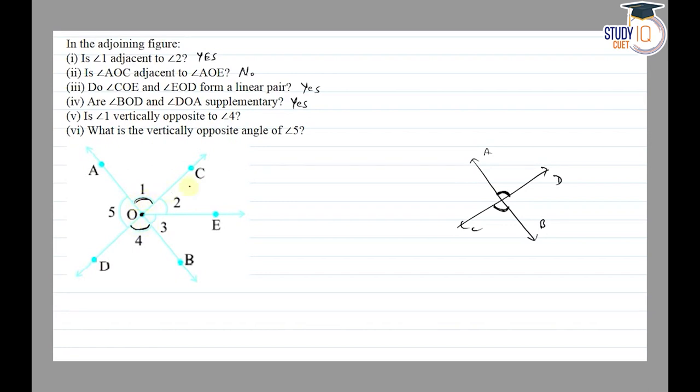So this is the vertically opposite angle of angle 5. So angle 5 is this angle, and this is AB and CD. So this is vertically opposite to angle 5, so it's going to be angle COB. Thank you.